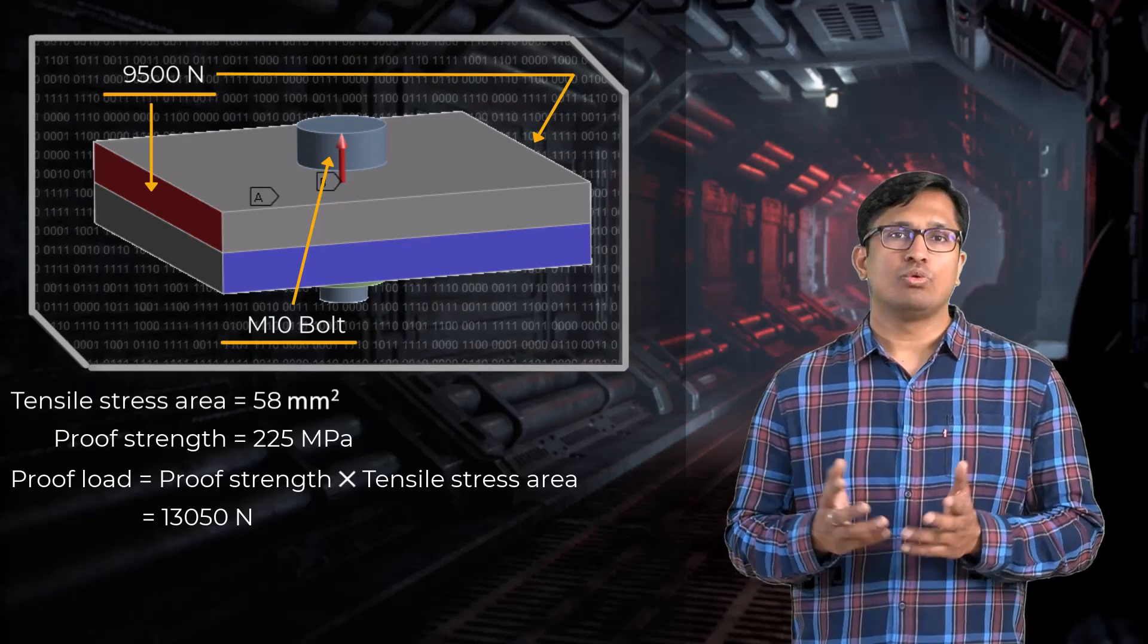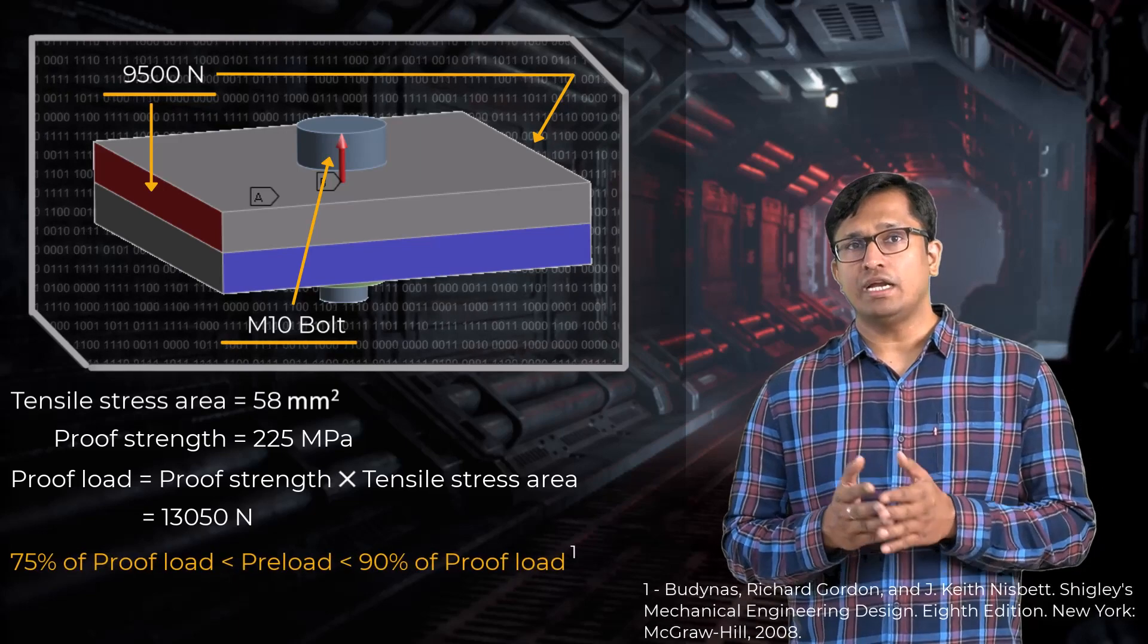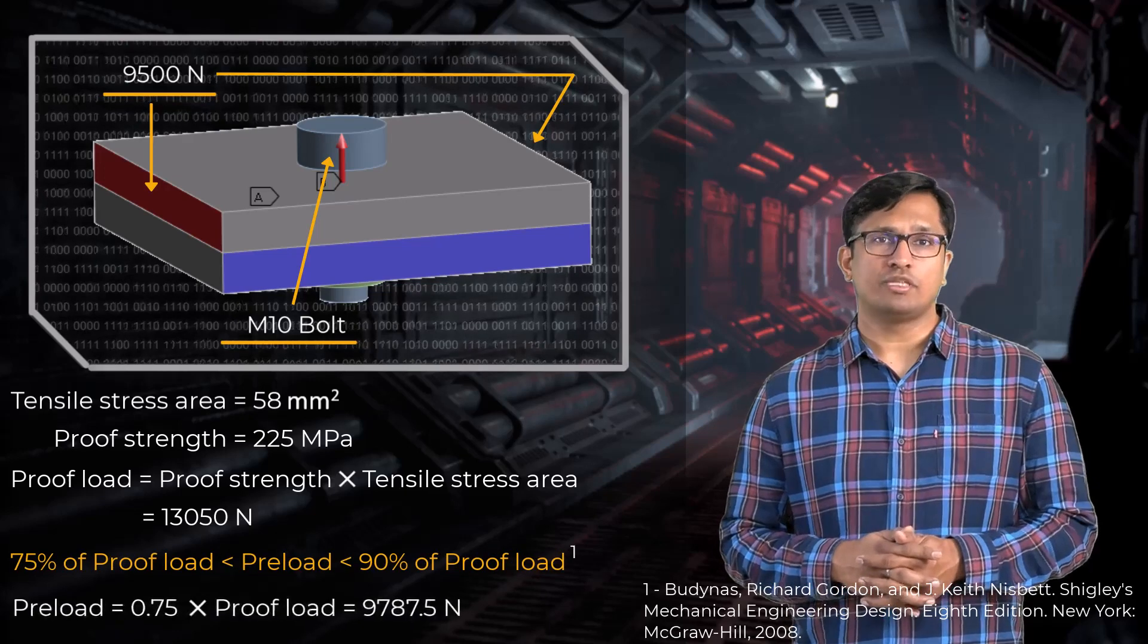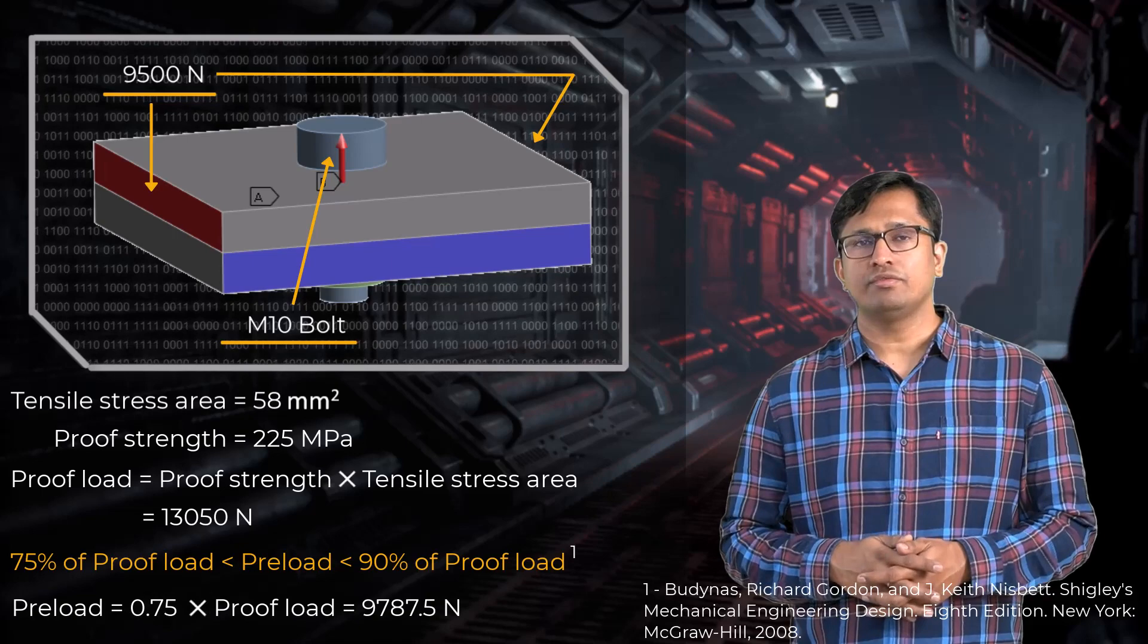Various design guides provide preload recommendations ranging between 75 and 90% of the proof load. We use a factor of 0.75 giving a preload of 9787.5 N.